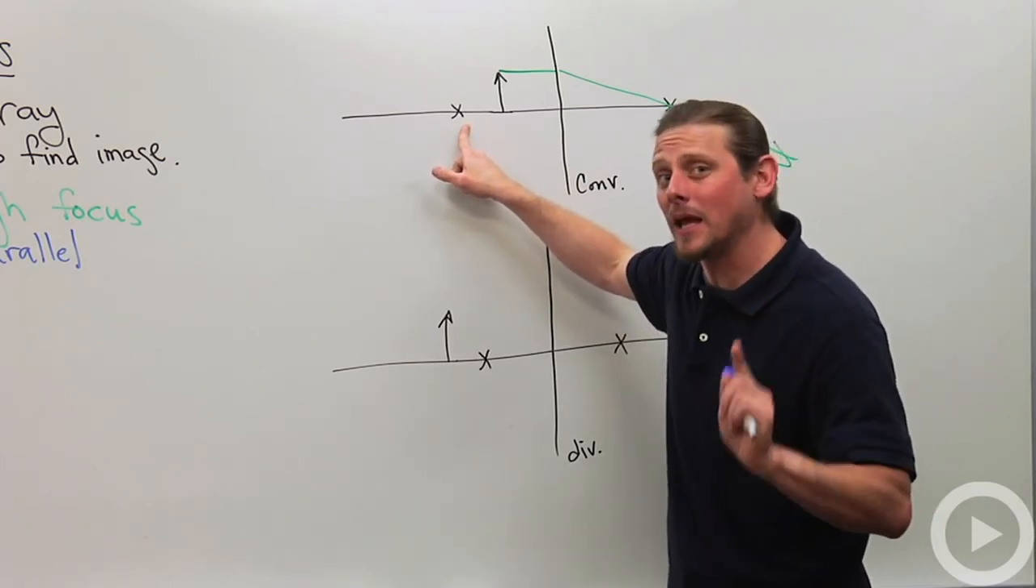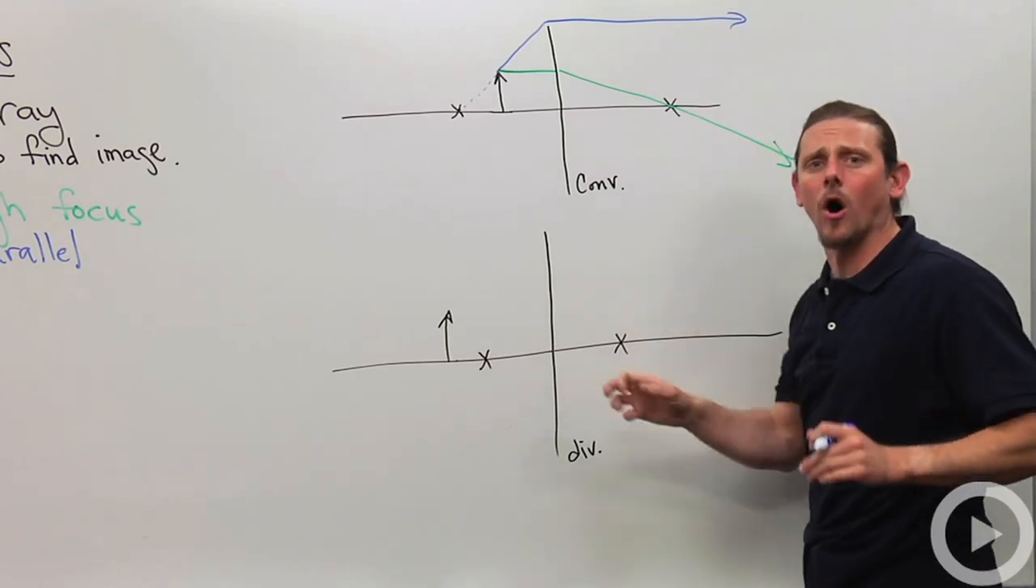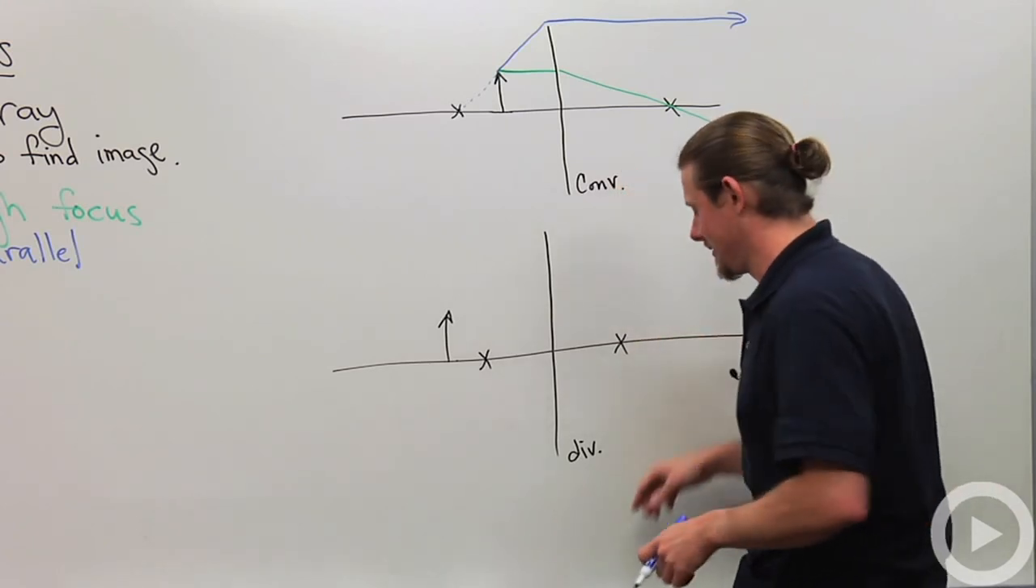Hmm. Well, the focus is kind of on the wrong side. So what I have to interpret that to mean is that I want the ray that looks like it was coming from the focus. Out parallel. Notice that these two rays are never going to meet on the proper side of the lens. So that's going to indicate a virtual.